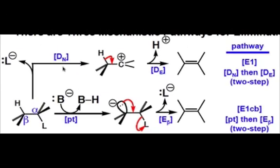If leaving group dissociation happens first, we have the top pathway, in which the leaving group is lost via a D_n type step, leading to a carbocationic intermediate. This intermediate can then lose an electrofuge, typically H+, via a D_E type step, to generate our alkene product.